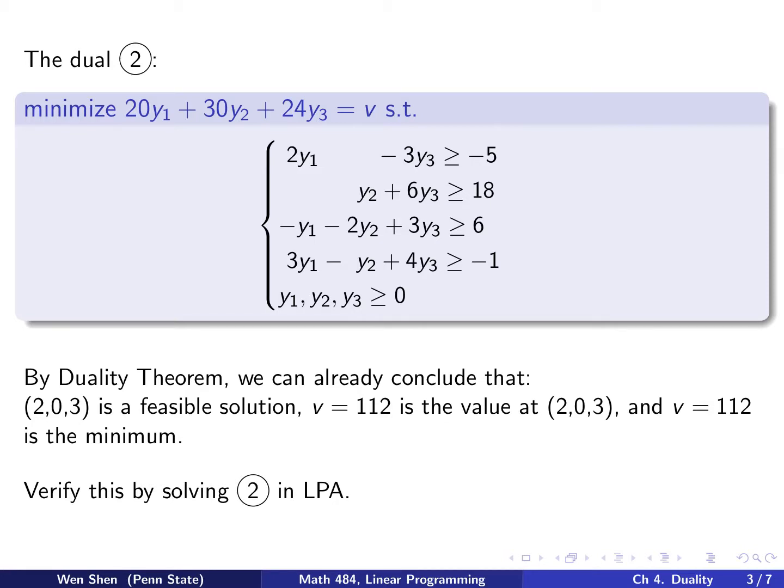We can rewrite it into standard form by adding slack variables for each of the constraints, and then put it into canonical form by adding artificial variables. Let's see the details.